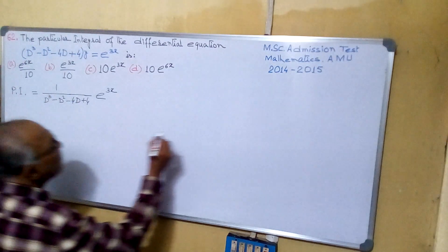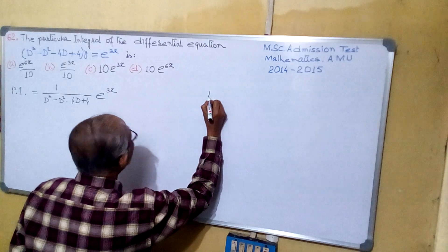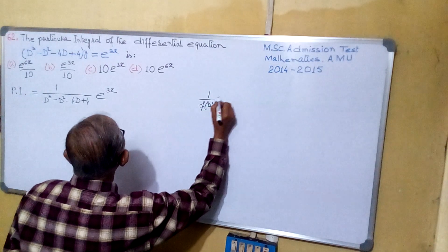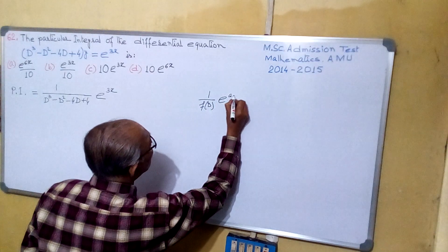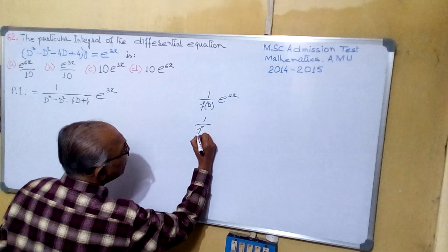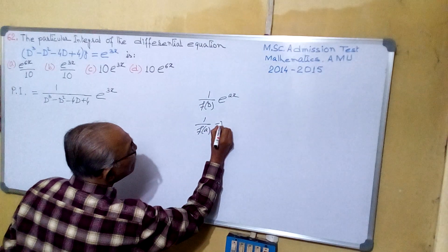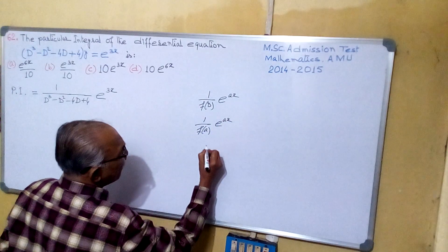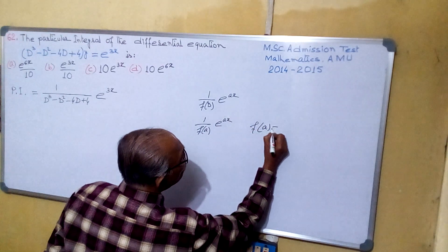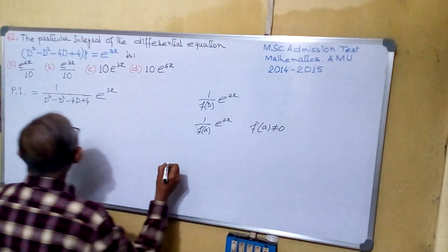See, this is 1 by f(d) into e to the power ax. It is equals to 1 by f(a) into e to the power ax, provided f(a) not equals to 0. Now check it.